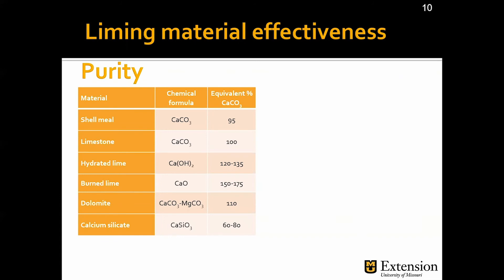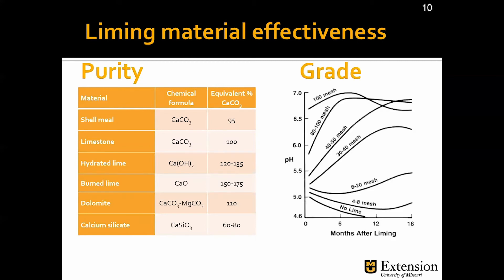Here we have a table that shows the purity of different liming materials compared to calcium carbonate, which is the standard reference for liming materials. Notice that shell marl, the first option, is 95% equivalent to calcium carbonate because it contains other components. Notice also that some liming materials can have over 100% — meaning their neutralizing capacity is higher than that of calcium carbonate. Grade or fineness refers to how finely ground are the particles in that liming material. A graph shows how quickly a liming material will change the pH based on particle size — the higher the mesh, the smaller the particle size, and smaller particles take less time to change the pH. Both purity and fineness are considered when determining the ENM of a liming material.